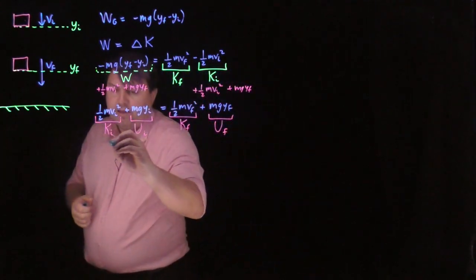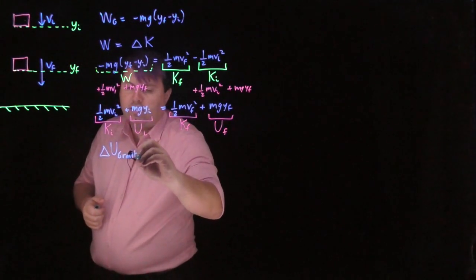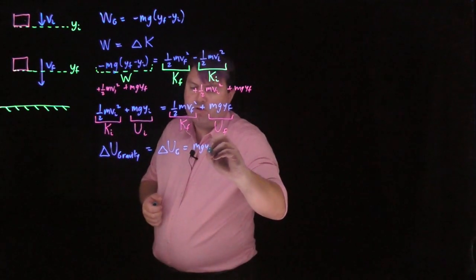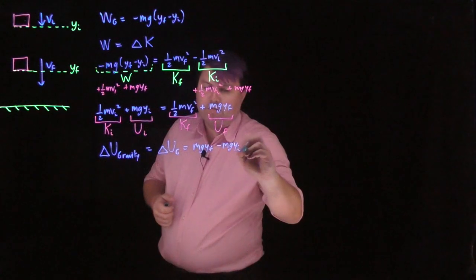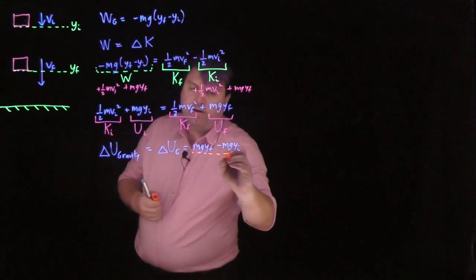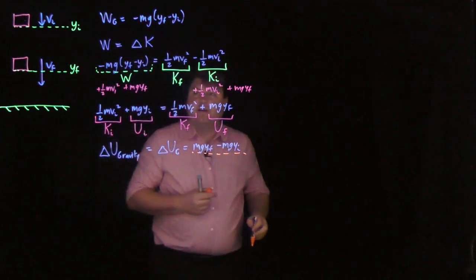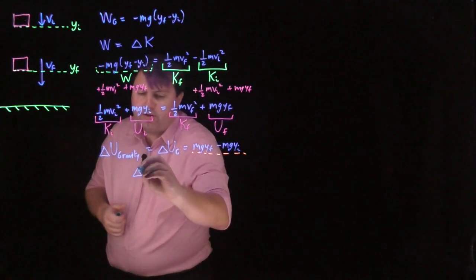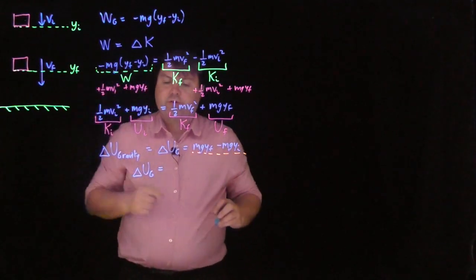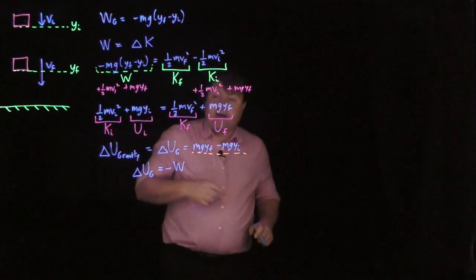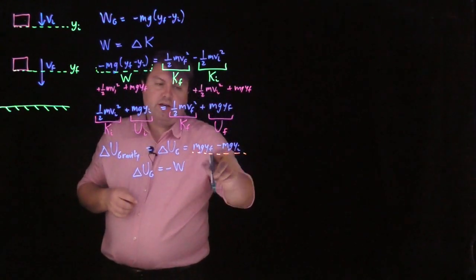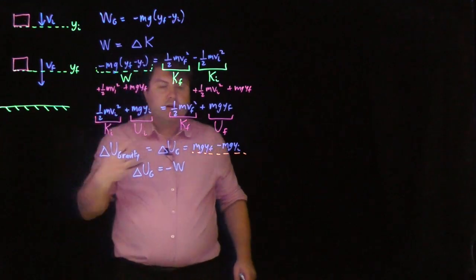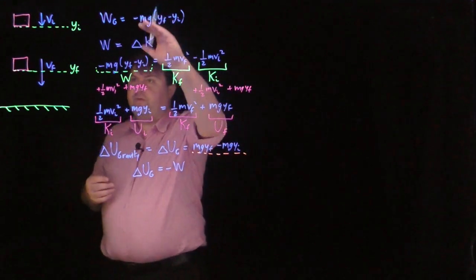We can look at the change in potential energy for gravity, written as ΔUg. That would be the final state, mg·yf, minus the initial state, mg·yi. If we notice, this looks familiar — it matches our earlier expression, with the only difference being a minus sign. So we have that the change in potential energy equals the negative work. This works because potential energy is path independent — it only depends upon the final and initial positions, not how we travel between them.